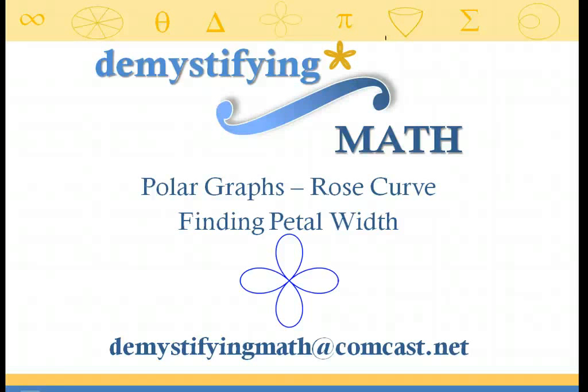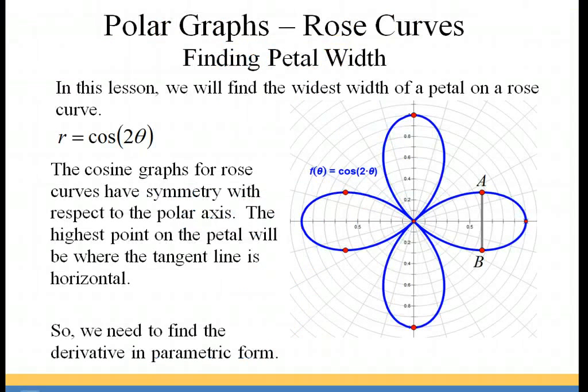Welcome to Demystifying Math. In this lesson we're going to be discussing a rose curve. Specifically, we're going to find the widest width of a petal on a rose curve given by r equals cosine of two theta.